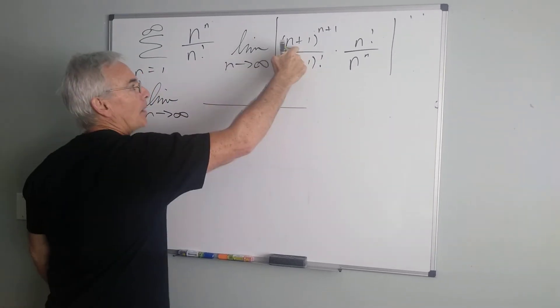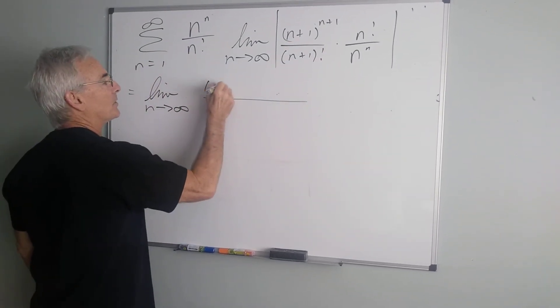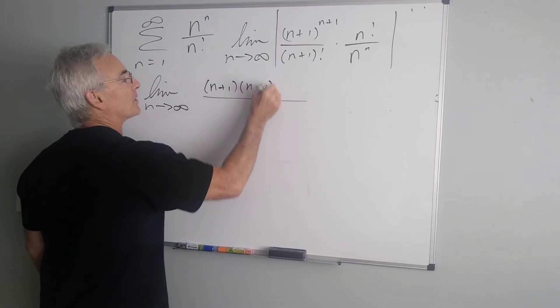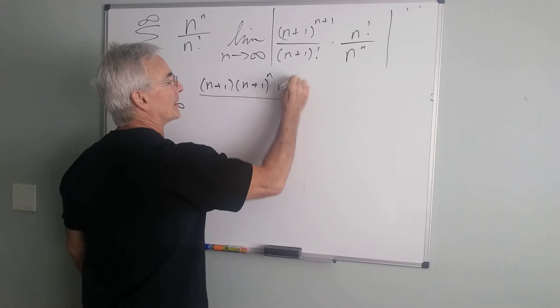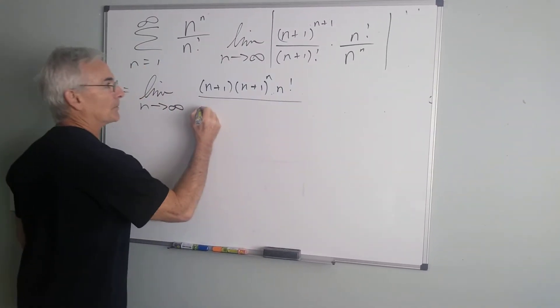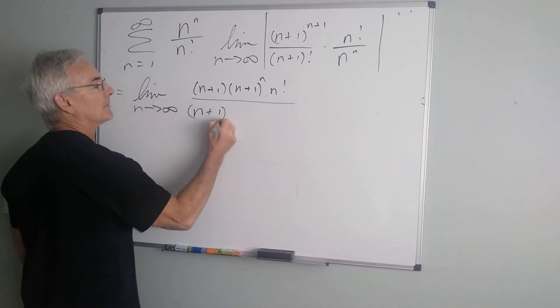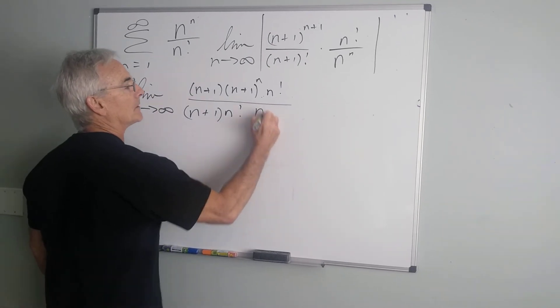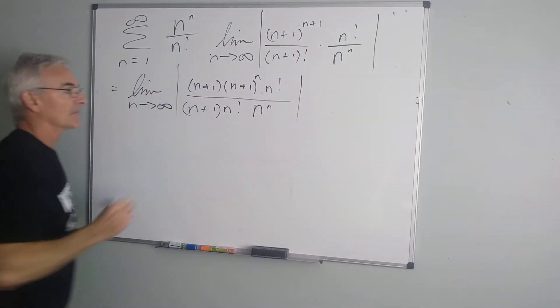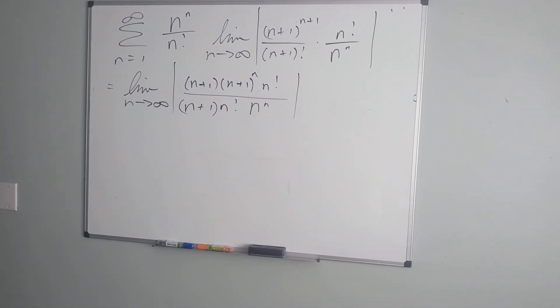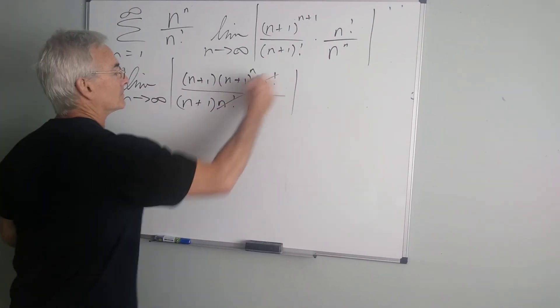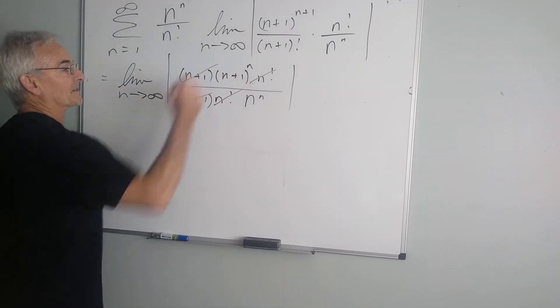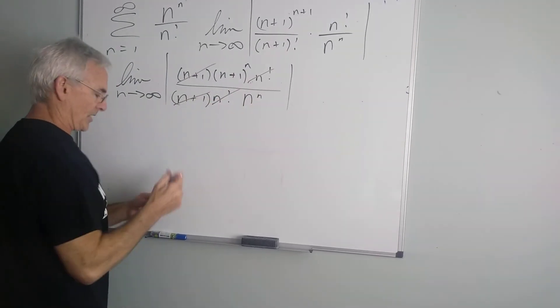So, on top, I'm going to have n plus 1 times n plus 1 to the n, using properties of exponents, times n factorial. This term here is going to be n plus 1 times n factorial times n to the n. Now, you'll notice, once again, all of the factorial terms will cancel nicely, and the n plus 1s will also cancel nicely. But that leaves us with two exponential terms.